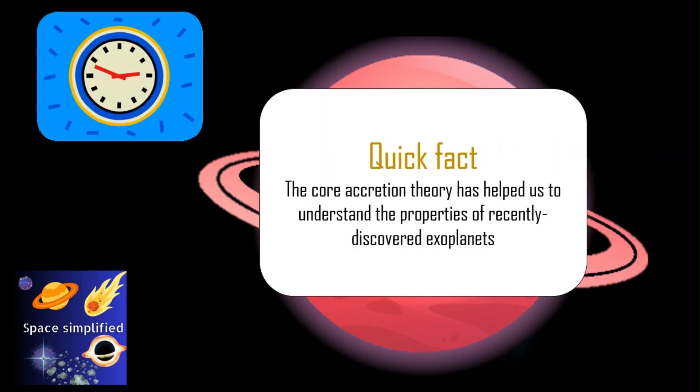Here's a fun fact. The core accretion theory has helped us understand the properties of recently discovered exoplanets. Using this theory, scientists can estimate the size and composition of an exoplanet based on the properties of its host star and the planet's distance from the star.